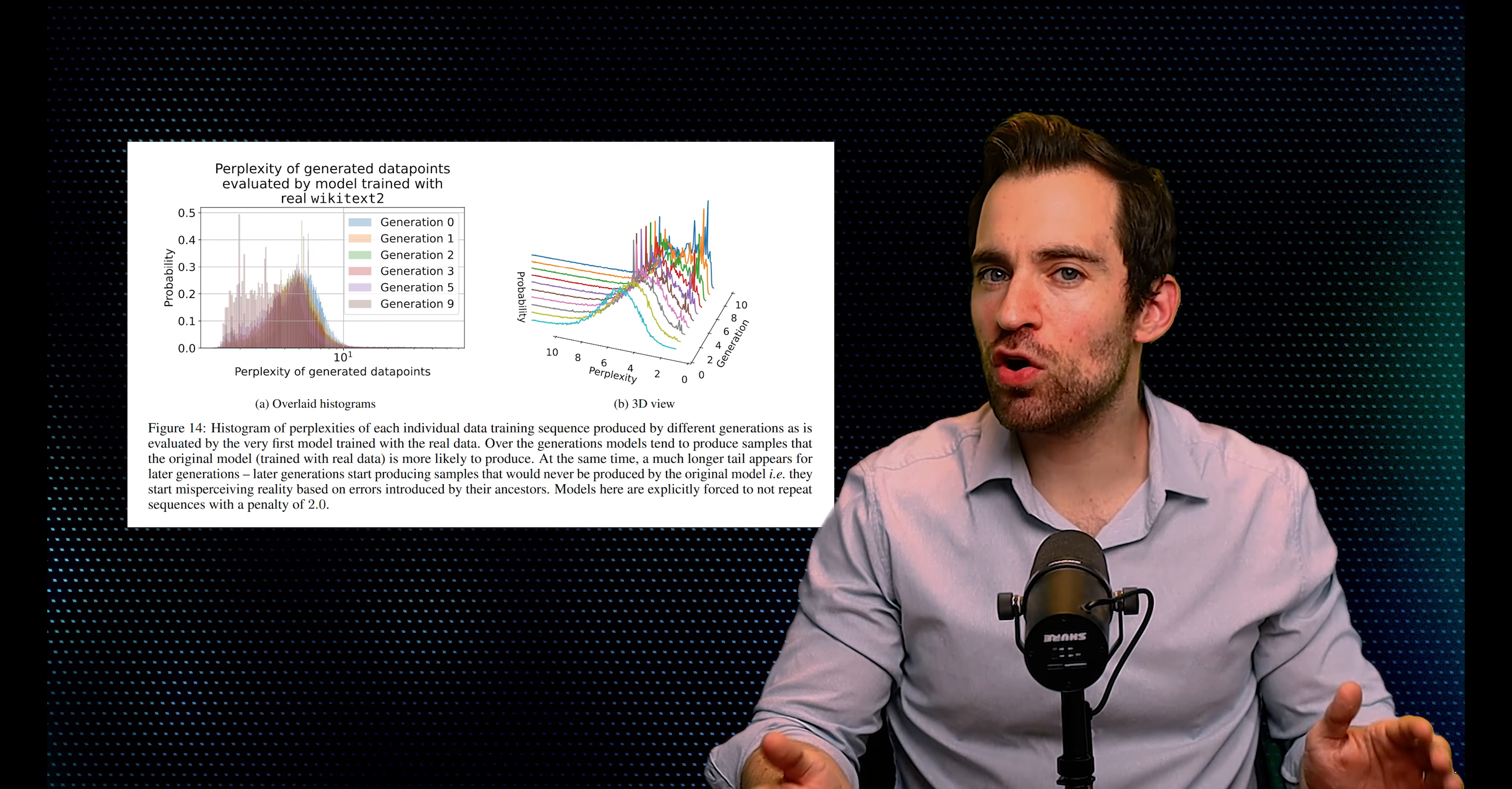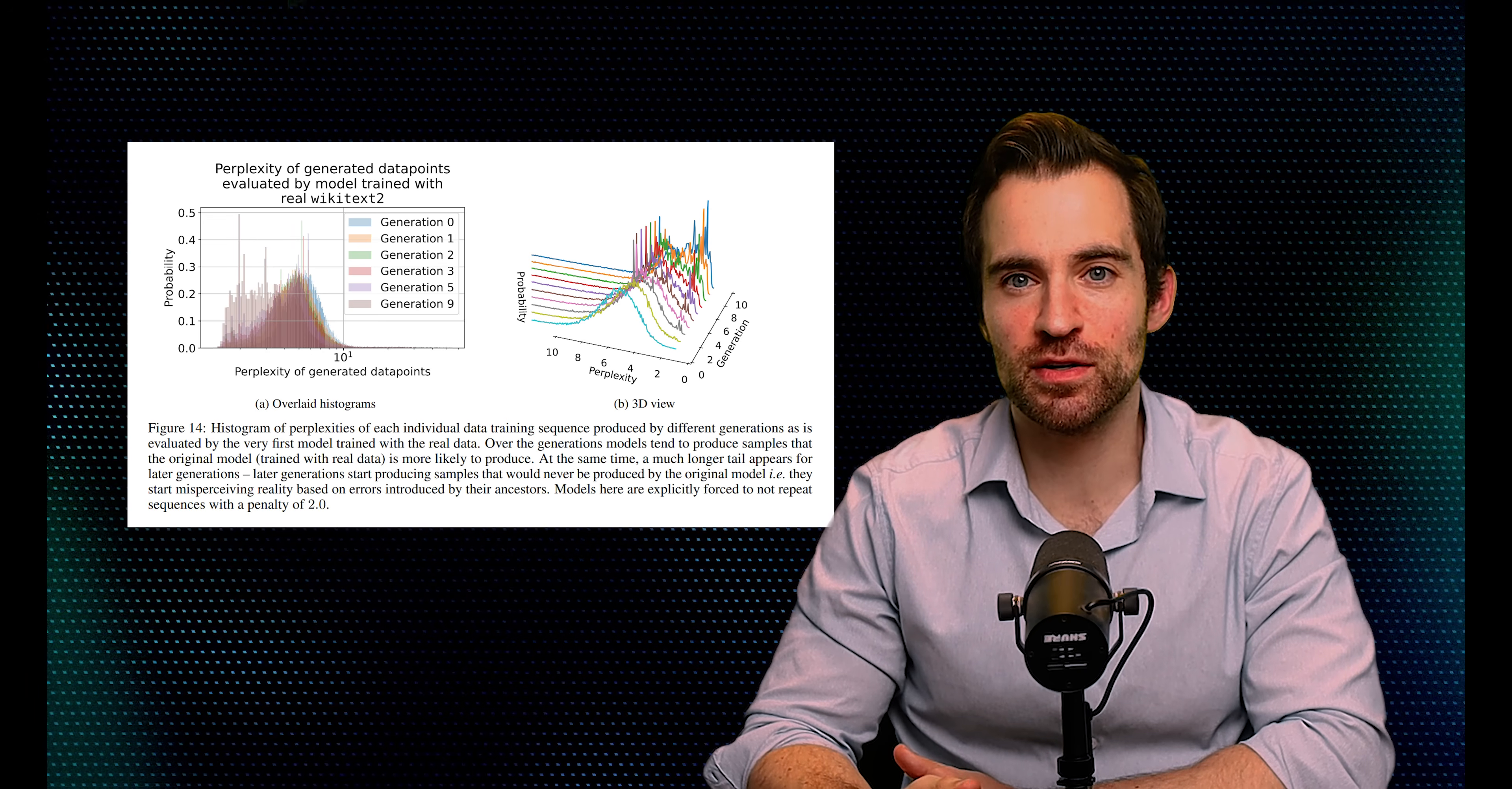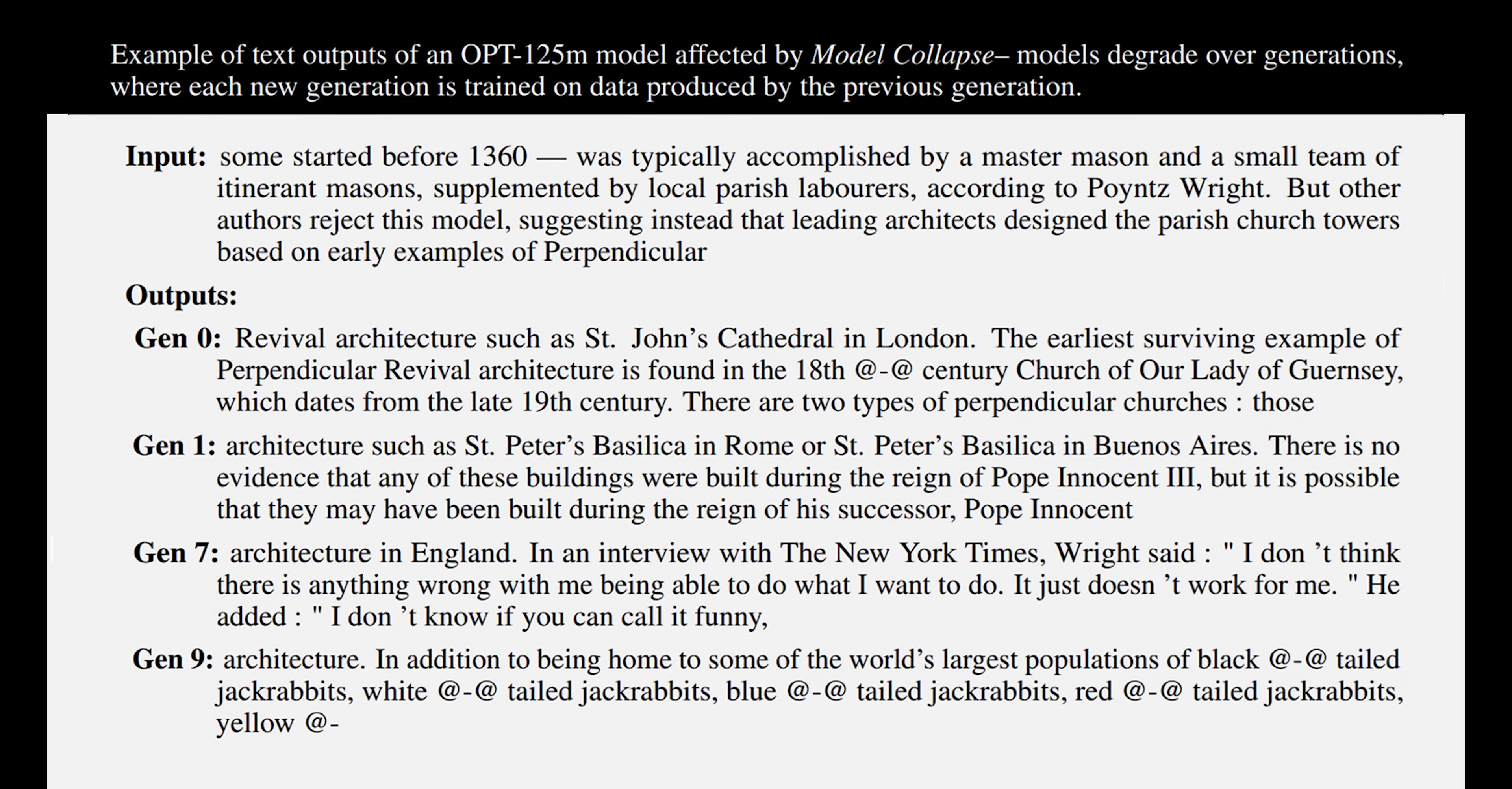Also, they erroneously create a long tail of fake sequences, made from accumulating and combining errors from previous models. More intuitively, they show how over the generations, a large language model begins to ignore its input and litter its response with high probability tokens.